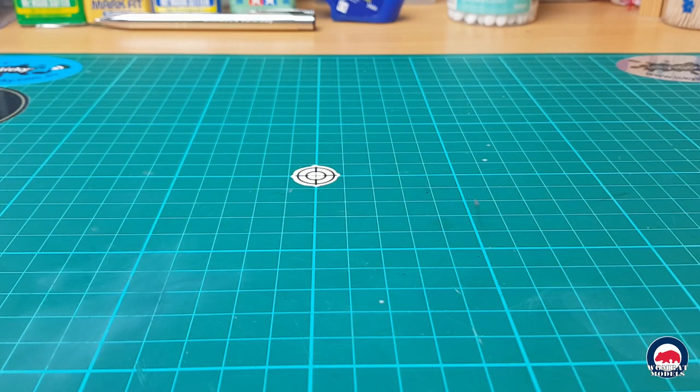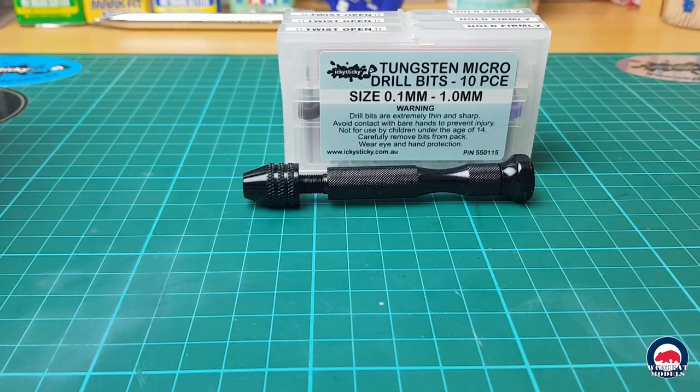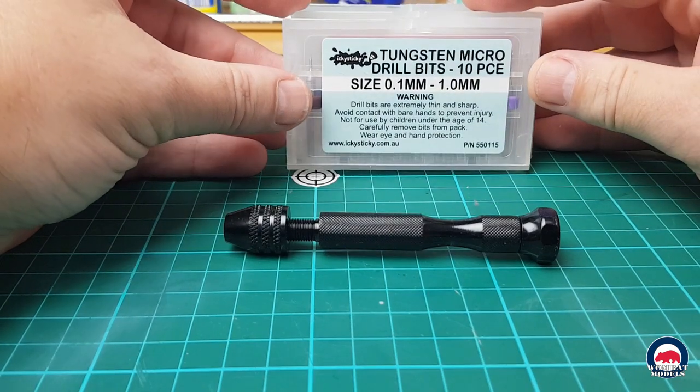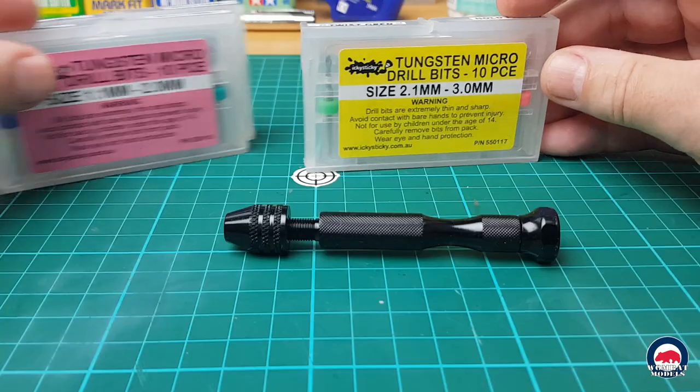And lastly we have our icky sticky pin vise and tungsten micro drill bit set. So we've got the pin vise there, and of course three sets of drills, the 2.1 to 3 millimeter.